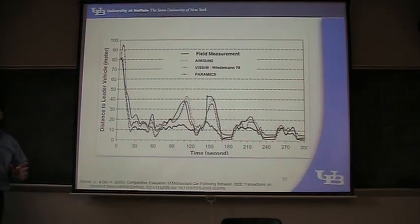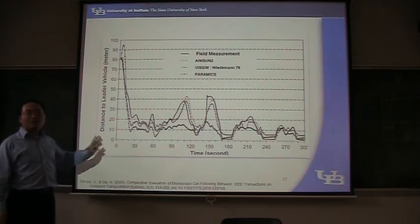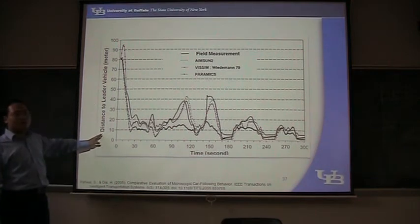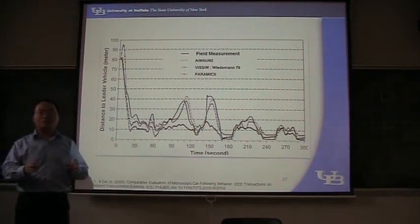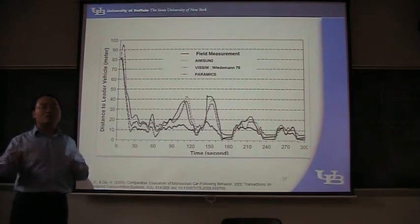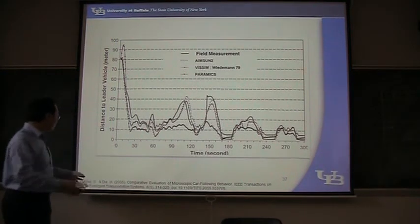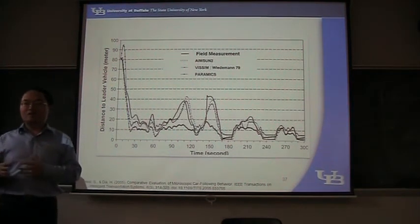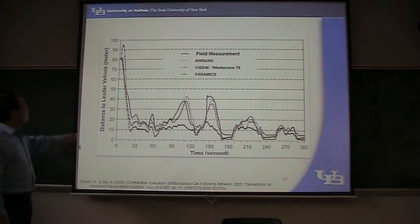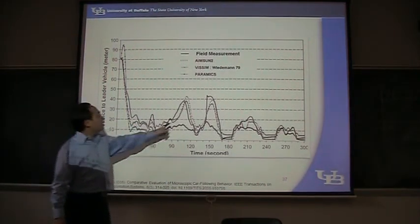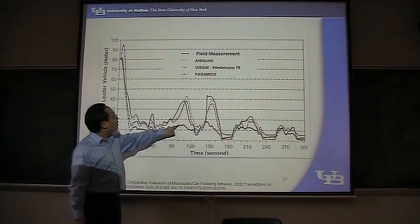Now let's compare these models — that's the last part. In the 2005 paper, they compare four things. They compare the field measurement of time and distance. They collect data from the field and use the leading vehicle speed and speed data to program these simulation models. The authors wanted to study how these simulation models — car-following models in simulation software — can replicate reality. This solid thick line is the field measurement, and we can see MSOM, VISSIM, and PARAMICS here.